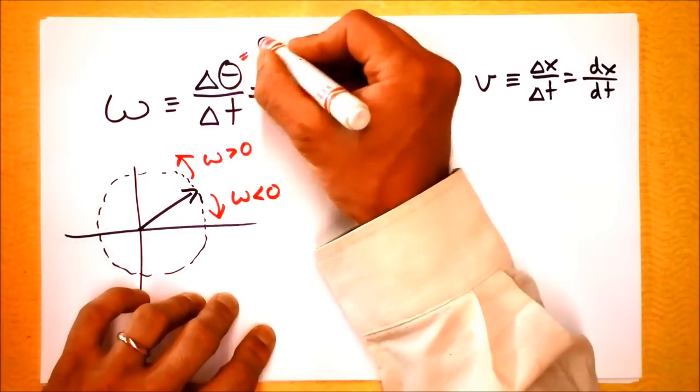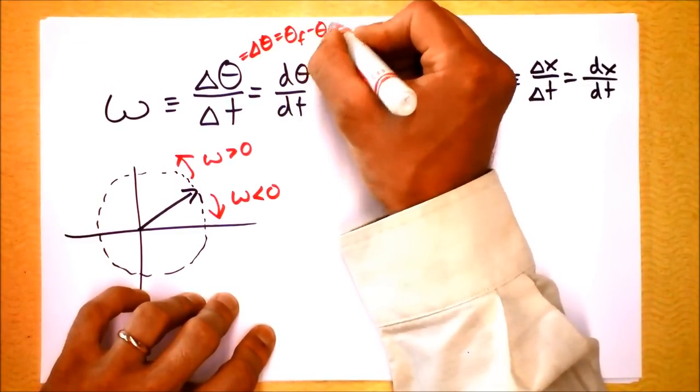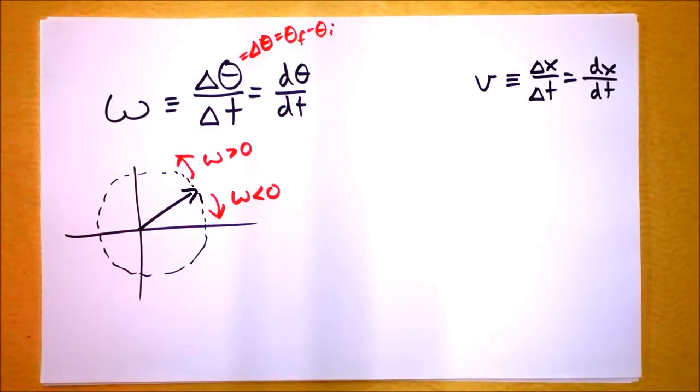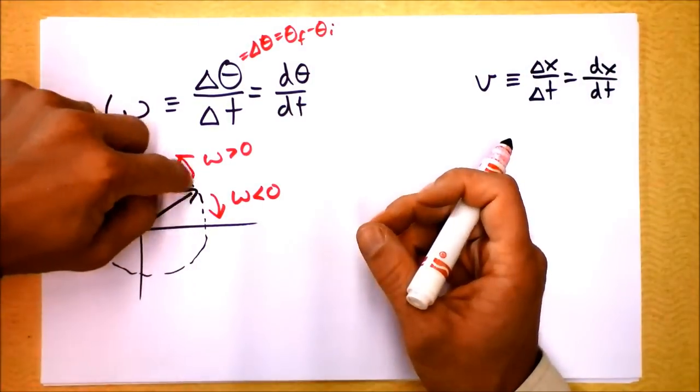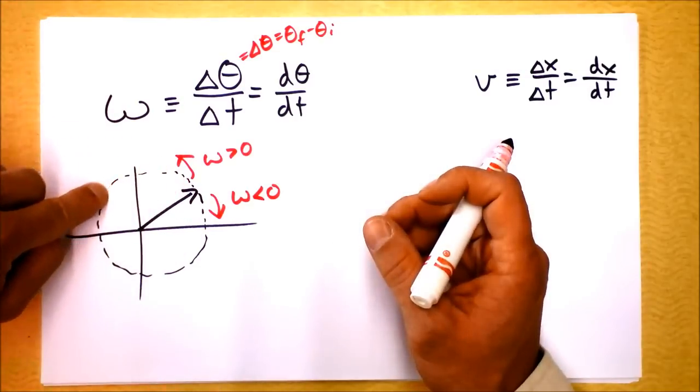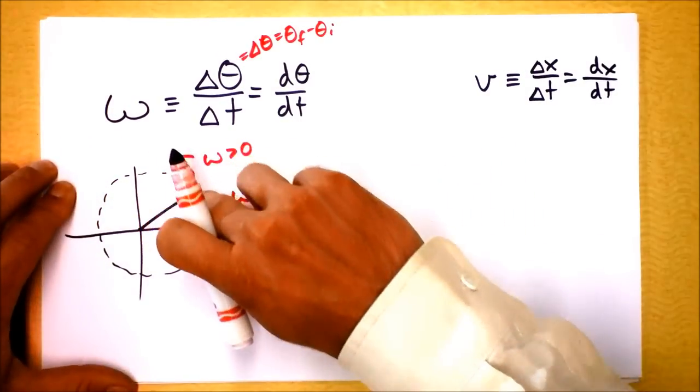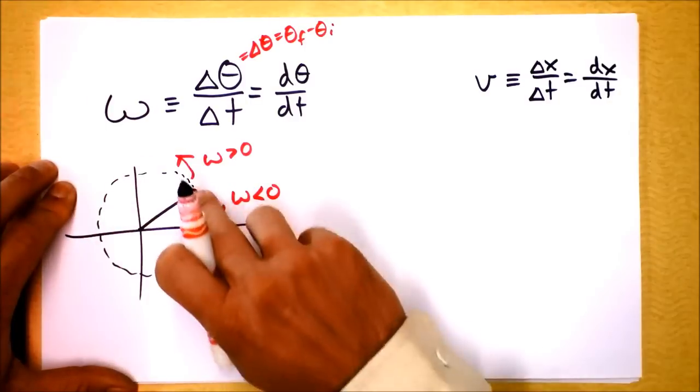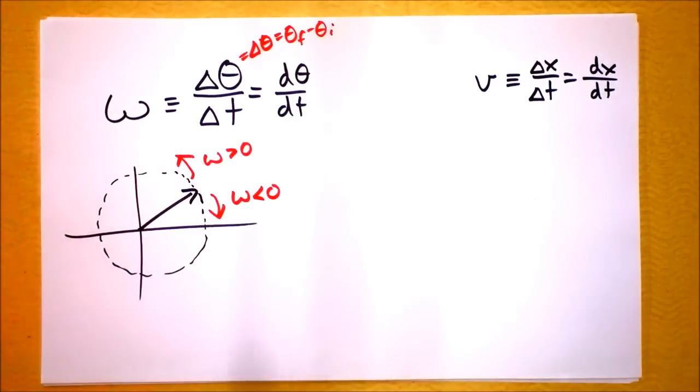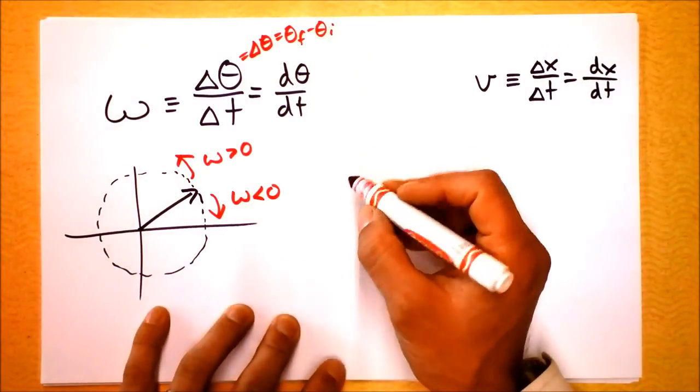Of course, you guys know that delta theta is equal to theta final minus theta initial. I don't need to go into that level of detail. But if things are going clockwise, then wo-mega is positive. If they're going clockwise steadily, then omega is a positive number, and it's a constant. If things are going clockwise steadily, then omega is a negative number, and it's a constant.